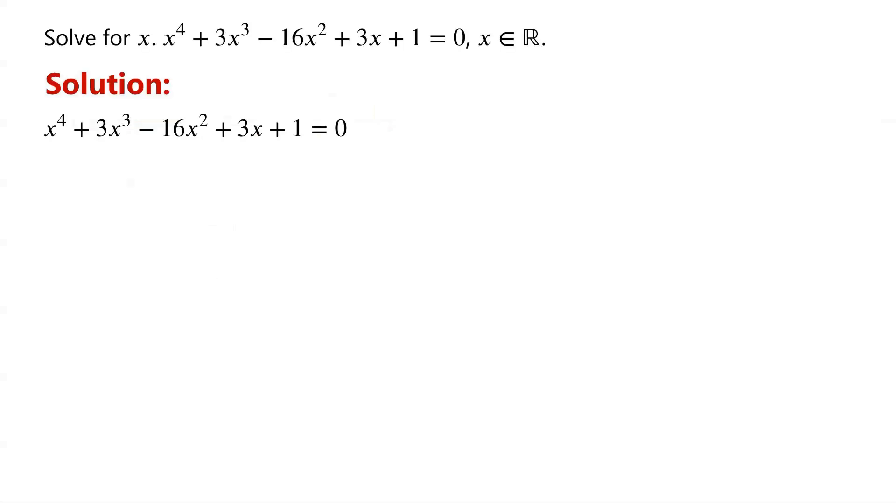It's not always easy to solve a quartic equation. By the Rational Root Theorem, we know that if the equation has rational roots, then they must be 1 or negative 1. However, it's easy to check that neither 1 nor negative 1 is a solution of the equation. Then, how to solve the equation?